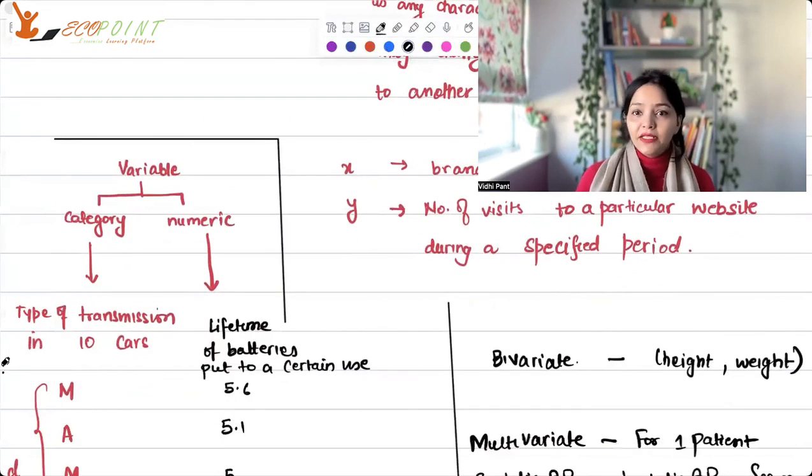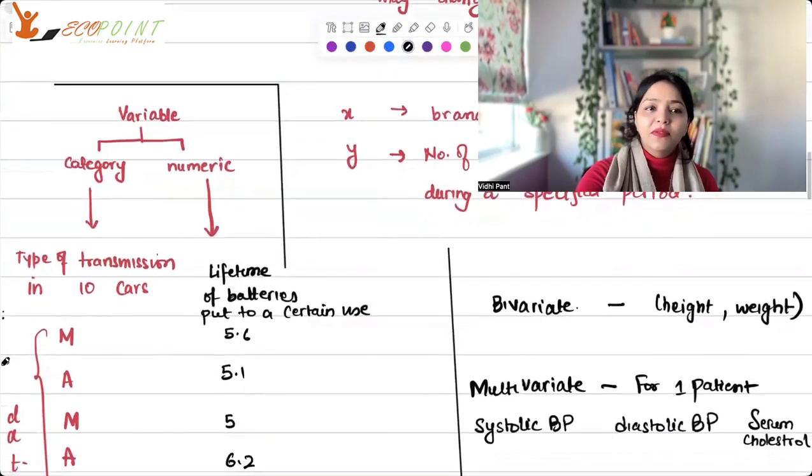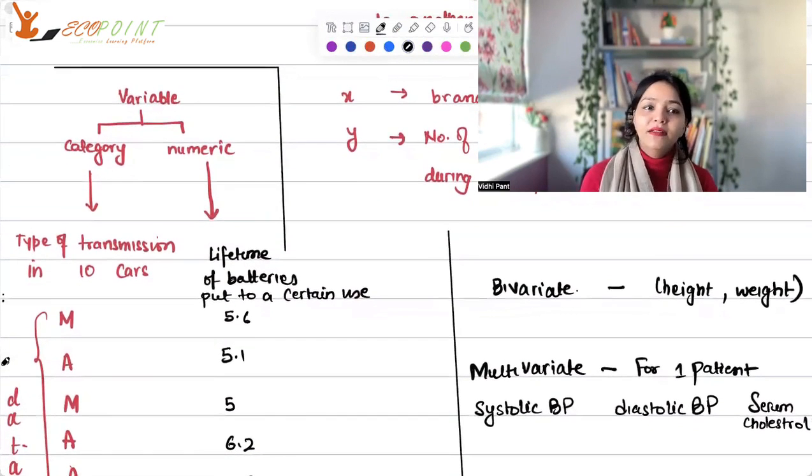But if I am taking the data for just 10 cars, a sample of 10 cars, then that becomes sample. And data is when you write down the value that you are giving to the characteristic for each, that becomes your data. Similarly, if instead of type of transmission, I am interested in the battery life. Battery life will be numeric. There's a certain lifetime attached to each.